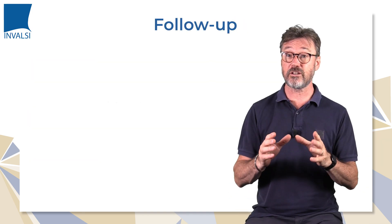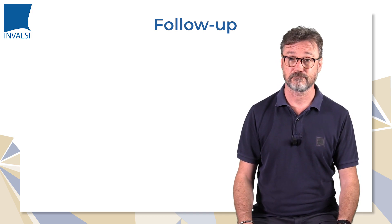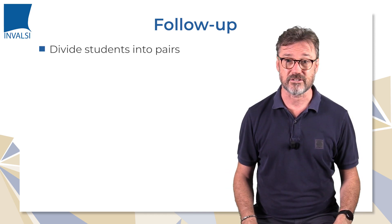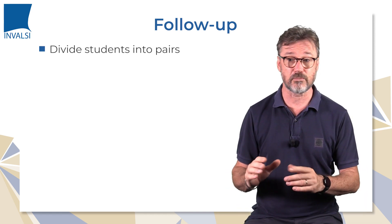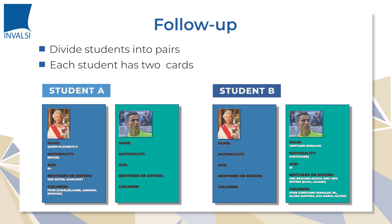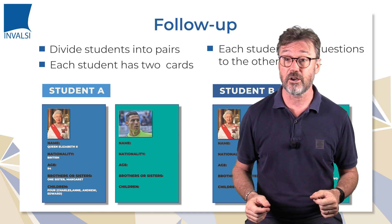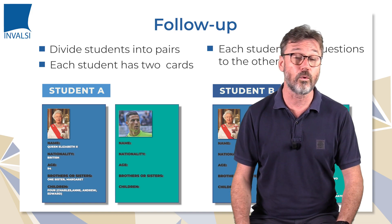We're now going to introduce a follow-up still related to the topic of the sound file. Divide the students into pairs — student A and student B. Each student has two cards: one with information about a famous person and another with missing information about another famous person. Each student has to ask questions to the other student in order to complete the missing information. You can pause the video and click on the links below to download all the materials.